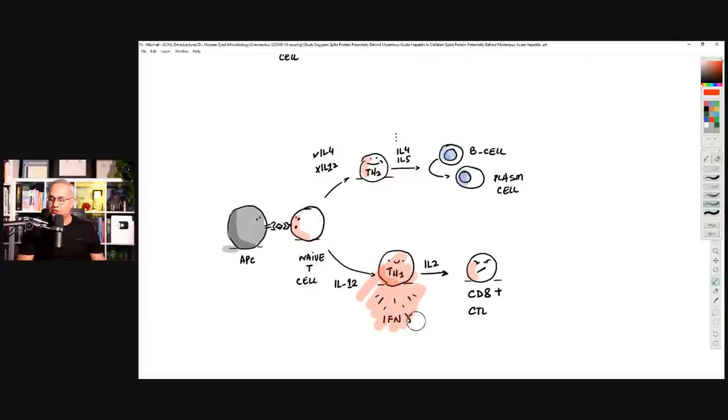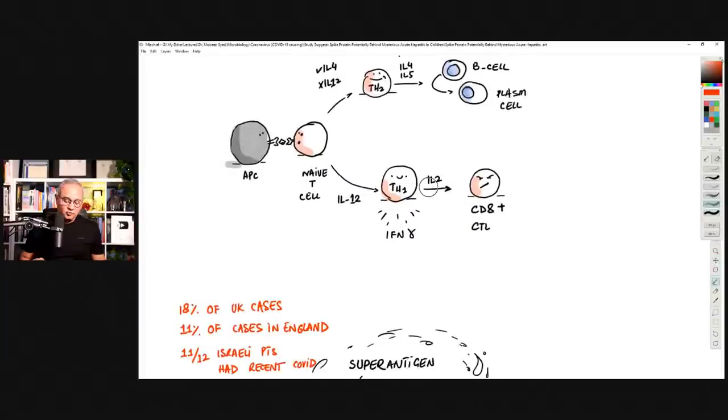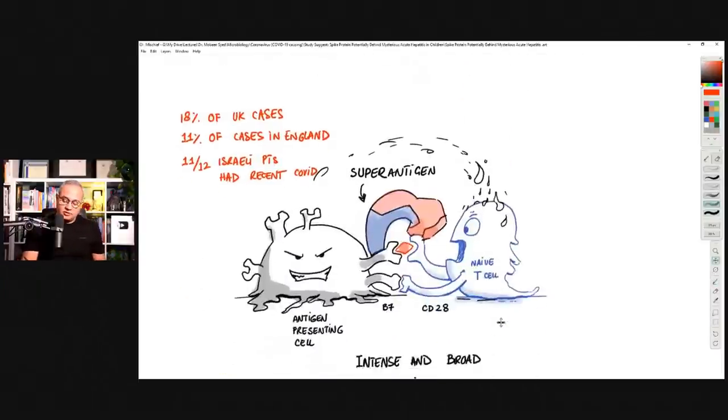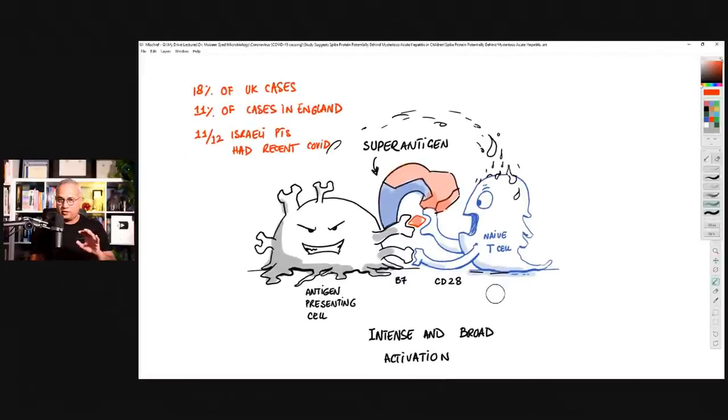So, interferon gamma is produced by T helper-1 and many other cells. T helper-1 will then cause these CD8 cells to become activated or cytotoxic T cells to become activated.